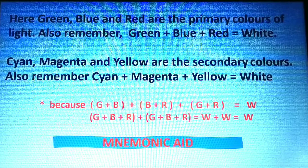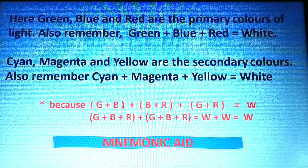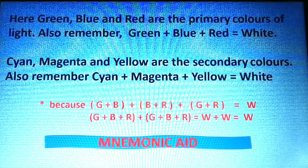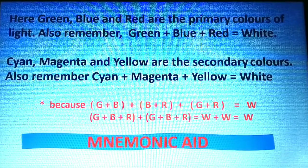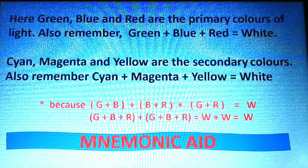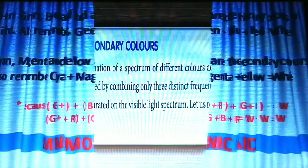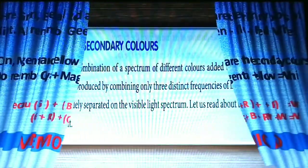So we can write G, B, R plus G, B, R equals white plus white, which is white. What you have just learned — 'Chief Ministers Great Bihar Rally' — is called a mnemonic aid, that is an aid to memory to help you remember.